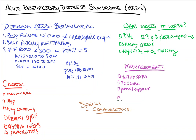Then we need vent management, and this is probably the most important thing. Many of you have read about the ARDSNet trial. We want low tidal volumes — 6 mL per kg — and we don't want our plateau pressure to be greater than 30.